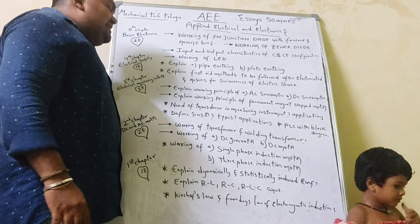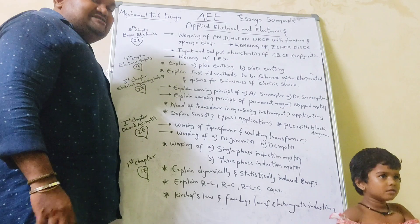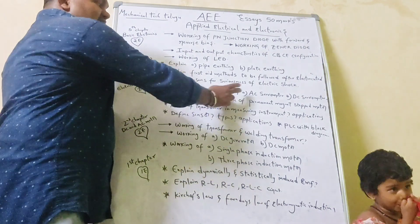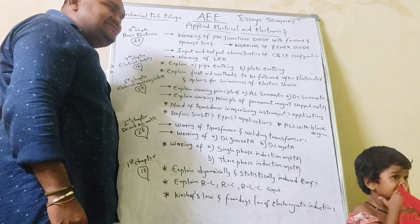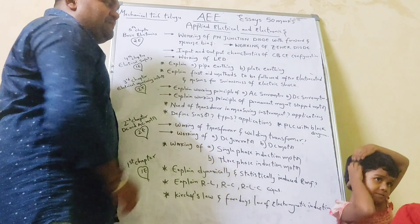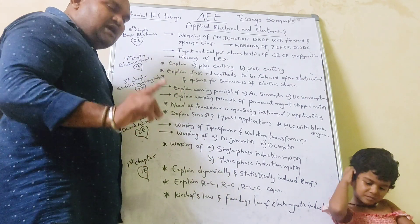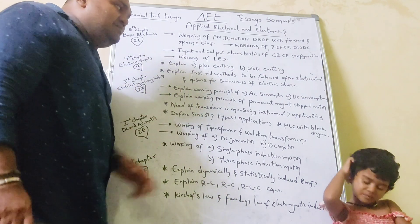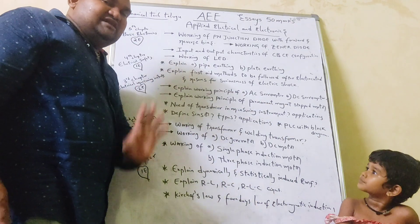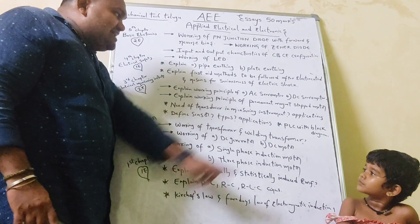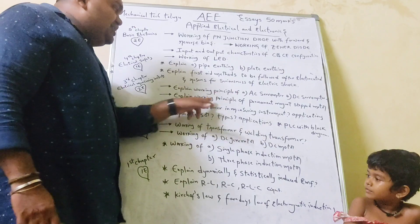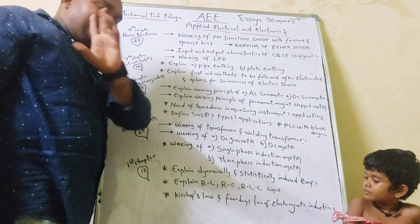Third chapter: Electrical Measuring Instruments. This has two essays. First, explain the working principle of AC servo motor and DC servo motor, and the working principle of permanent magnet stepped motor. I guarantee that the maximum AC servo and DC servo questions will be added. If you miss the permanent magnet stepped motor, these two questions will be added.